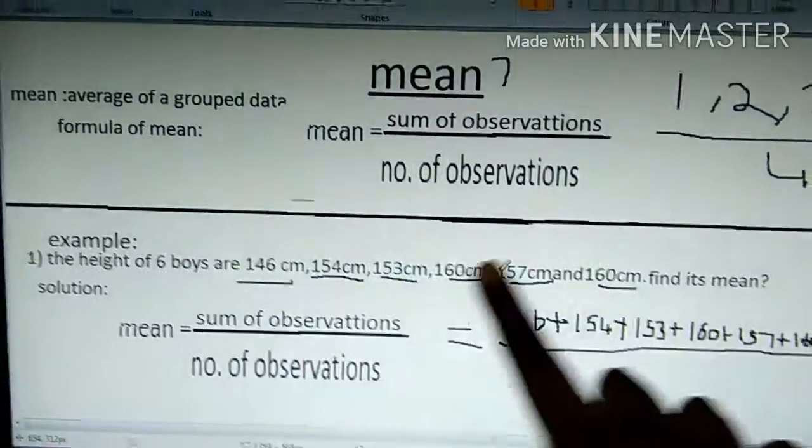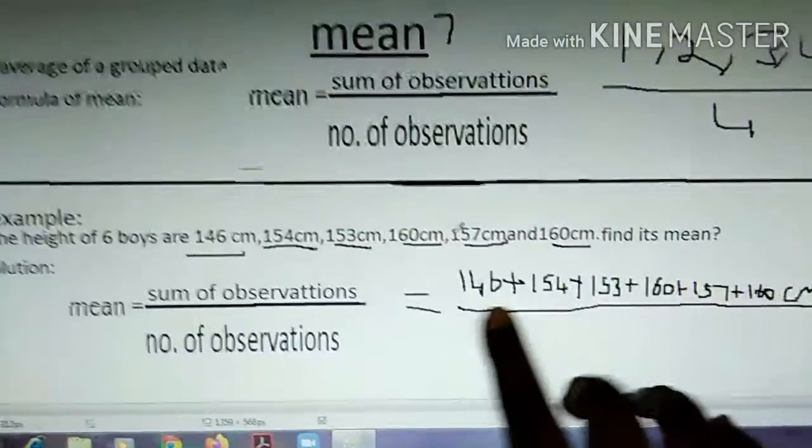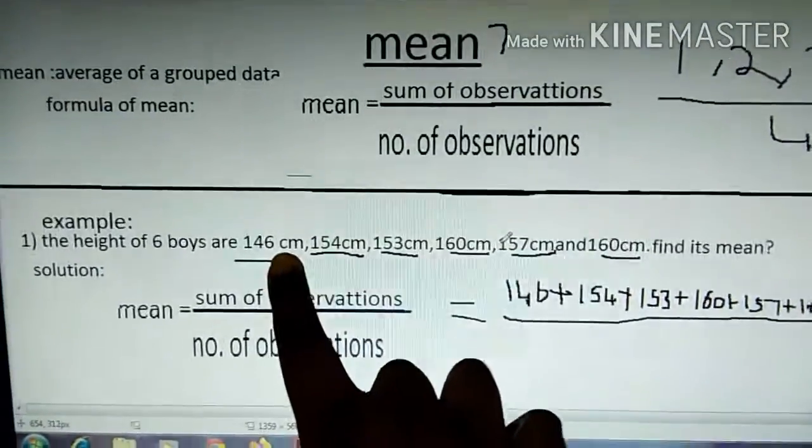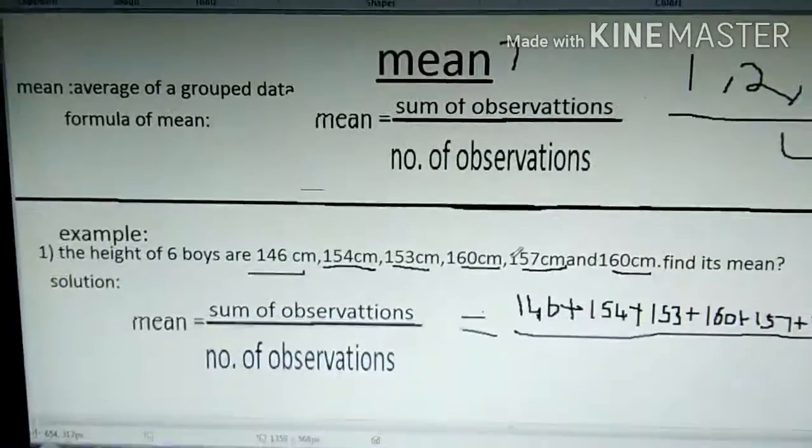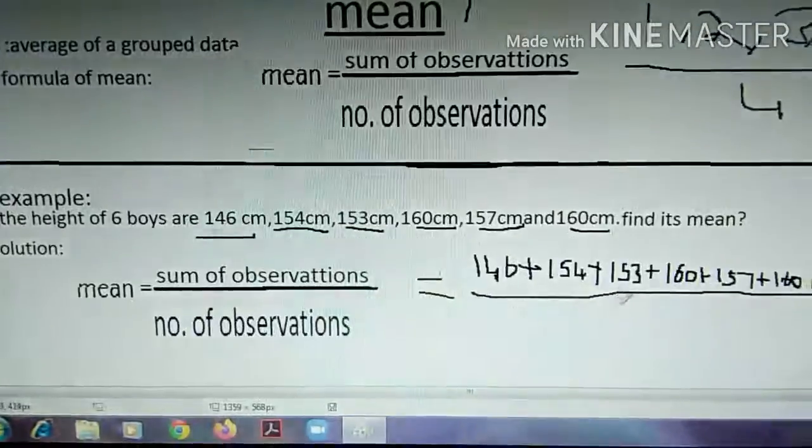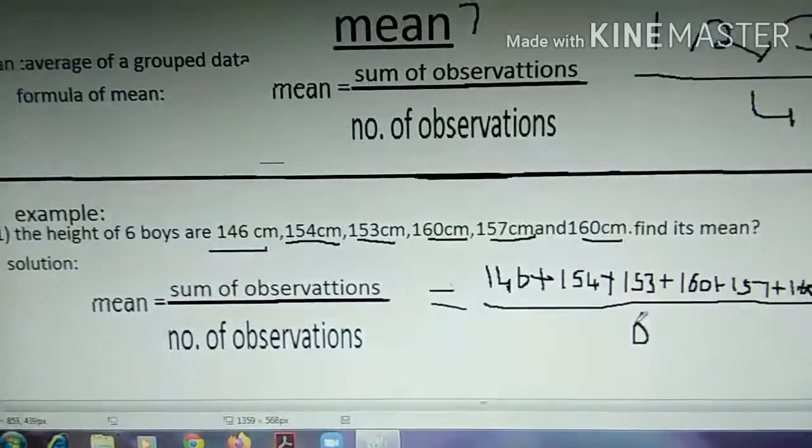Now, we have written all these values. Then, we need to count how many values are there: 1, 2, 3, 4, 5, 6. There are 6 values. So, we write the number of observations as 6.